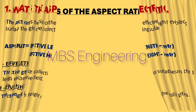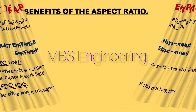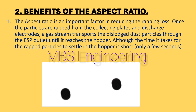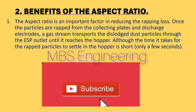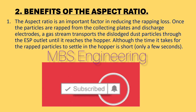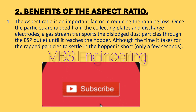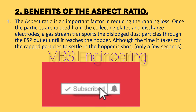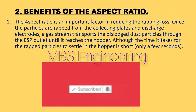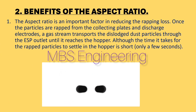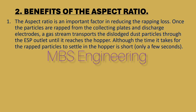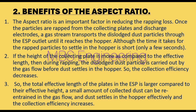Next, we are going to understand the benefits of the aspect ratio in the ESP. Point 1: The aspect ratio is an important factor in reducing the rapping loss. Once the particles are rapped from the collecting plates and discharge electrodes, a gas stream transports the dislodged dust particles through the ESP outlet until they reach the hopper, although the time it takes for the rapped particles to settle in the hopper is short — only a few seconds.